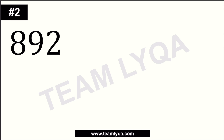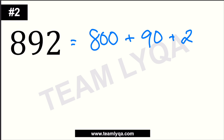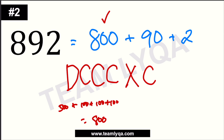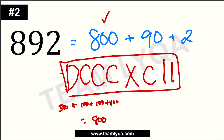Next, we have 892. We break it into 800 plus 90 plus 2. For 800: we write D plus CCC, which is 500 plus 100, 100, 100. That completes 800. For 90: that is 100 minus 10, so we write XC. For 2: that is just II. So 892 is written as DCCCXCII.